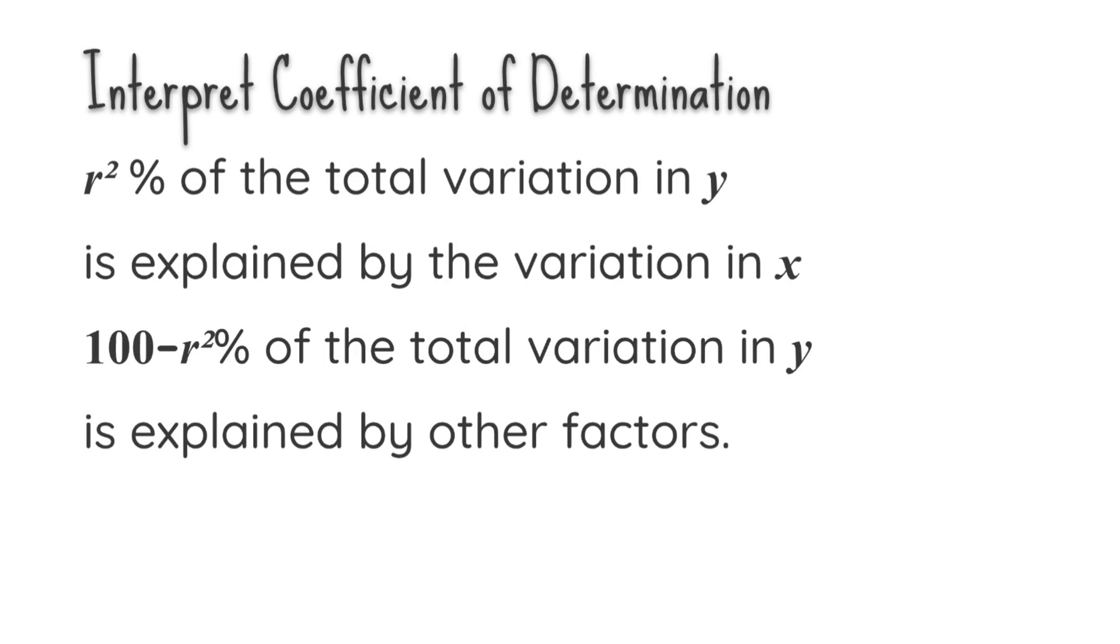Now, let's interpret coefficient of determination. Previously, the value of r squared is 0.6800. Let's change it into percentage. Then, it's going to be 68% of the total variation in y, which is sales, is explained by the variation in x, which is price.